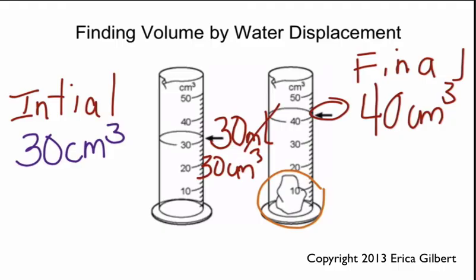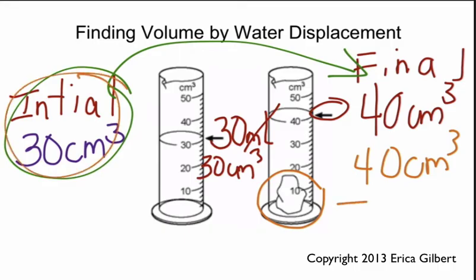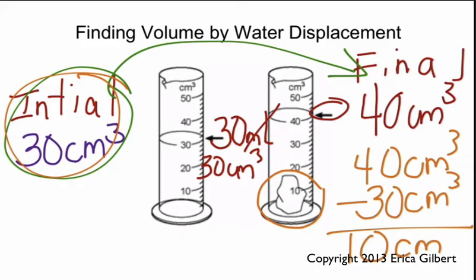Well, we're subtracting our initial from our final. So since our initial is 30 and our final is 40, we take 40 cubic centimeters and we'll subtract our initial, which is 30 cubic centimeters. And the difference of that is 10 cubic centimeters. So the volume of our rock would be 10 cubic centimeters.